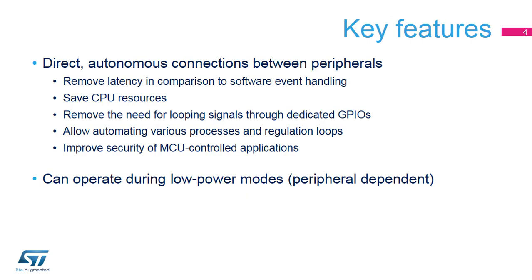The Interconnect Matrix offers two main features. First, it ensures direct and autonomous connections between peripherals, allowing the removal of latency in comparison to software handling. Second, the interconnection between certain peripherals can operate during low power modes, avoiding having to use the CPU.